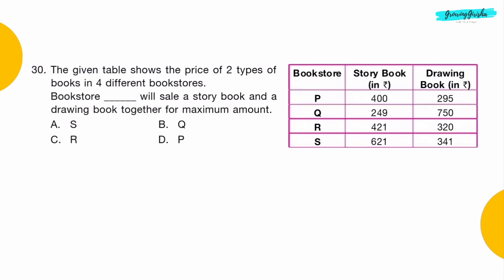Question 30: The given table shows the price of 2 types of books in 4 different bookstores. Bookstore dash will sell a storybook and a drawing book together for maximum amount. Option B: Bookstore Q.